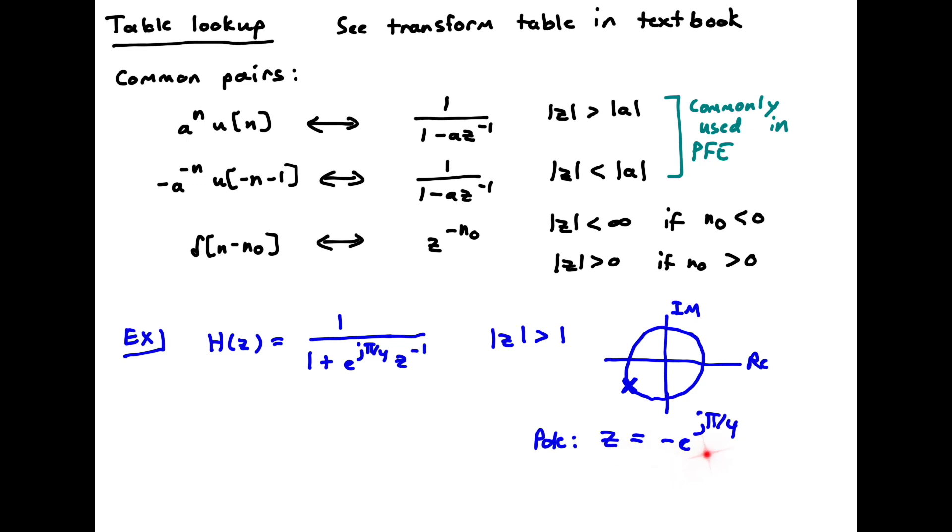The pole is just at minus e to the minus j pi over 4, which is over here in the complex plane. It's actually on the unit circle. So this is the unit circle here. And it's around at minus e to the j pi over 4. And so we have that.